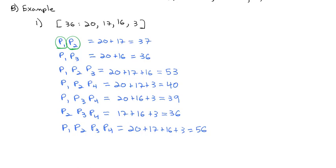Similarly, in the second coalition of Player 1 and Player 3: if Player 1 were removed, Player 3 would not make quota alone, so Player 1 is critical. With only 16 votes, Player 3 is also not enough alone, so Player 3 is critical too. In the next coalition of Player 1, 2, and 3: removing Player 1 leaves 17 plus 16, which is 33 — not enough, so Player 1 is critical. But removing Player 2 leaves 20 plus 16, which is 36 — quota is met, so Player 2 is not critical. Removing Player 3 leaves 20 plus 17, which is 37 — quota is met, so Player 3 is not critical either.